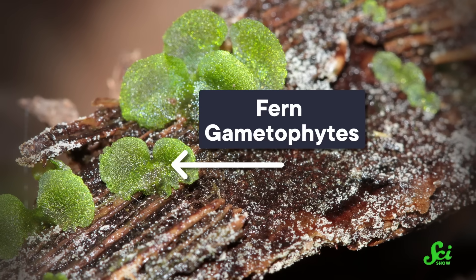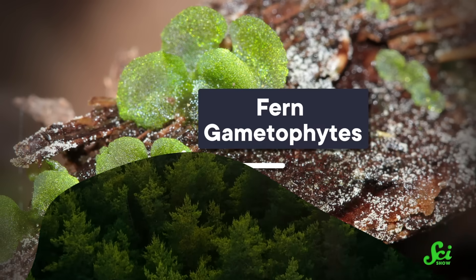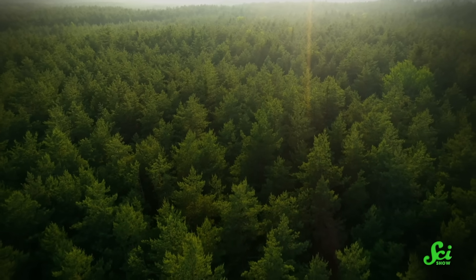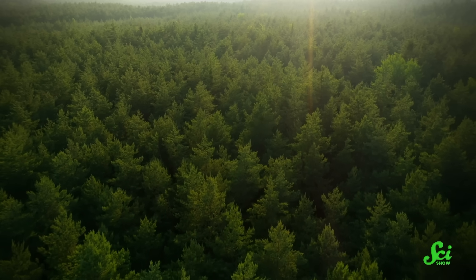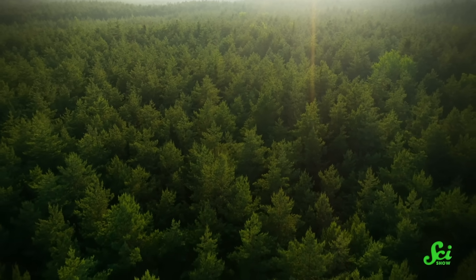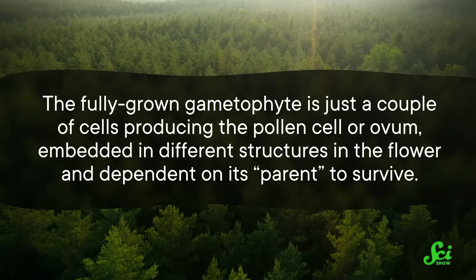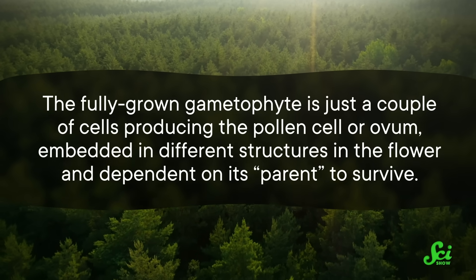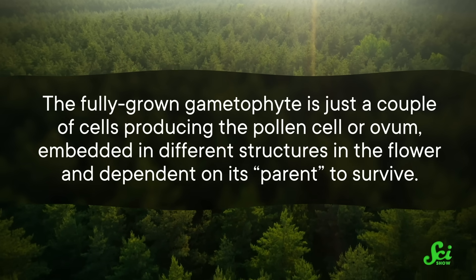Fern gametophytes look like little green splats — they're free-living enough to be noticeable if you're looking hard enough. However, flowering plants, as well as conifers, ginkgos, and the like, have become so lopsided that you have to essentially dissect plant bits to find the gametophyte. And this is where the invisible generations come in. The fully-grown gametophyte is just a couple of cells producing the pollen cell or ovum, embedded in different structures in the flower and dependent on its parent to survive. It's still there as its own multicellular thing, though we're getting to pretty charitable definitions of multicellular — like single digits.